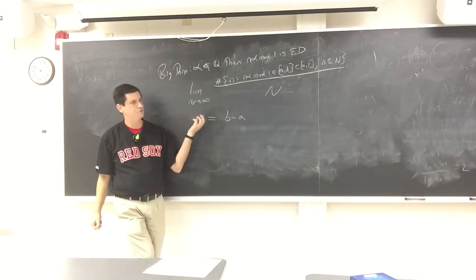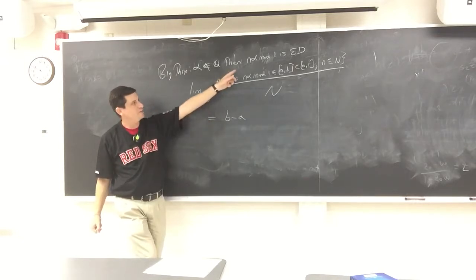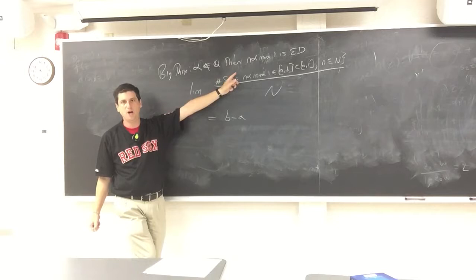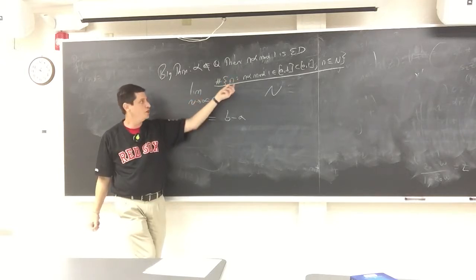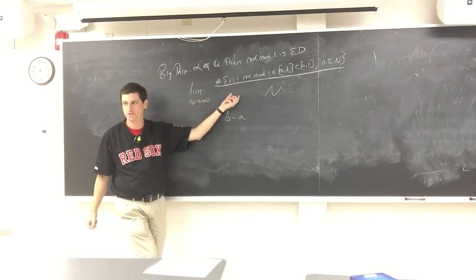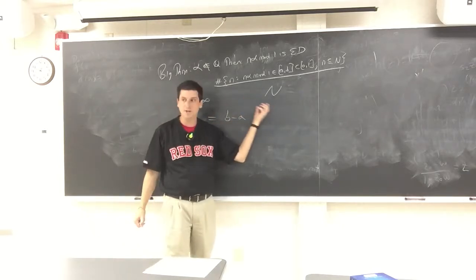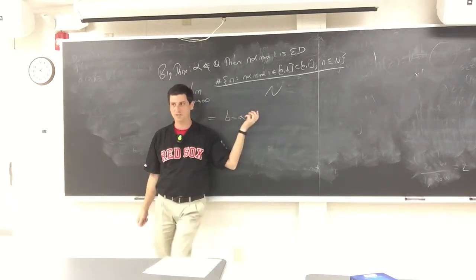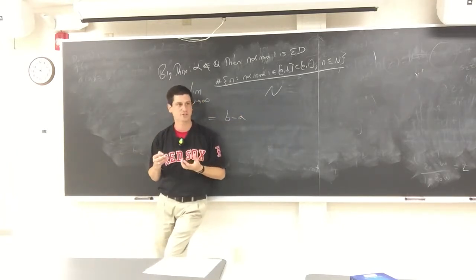More is true. If you know things about the algebraic structure of α — how well α can be approximated by rationals — you can actually get convergence rates. Not just that in the limit it will be b minus a, but how quickly you approach this.